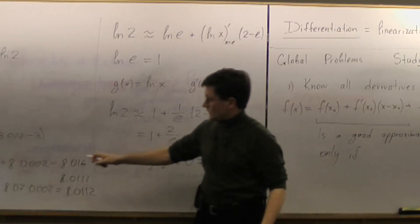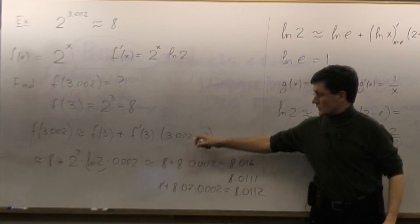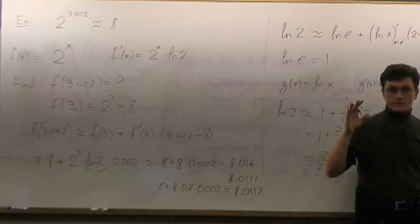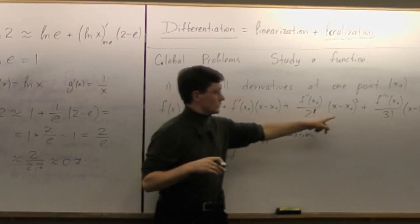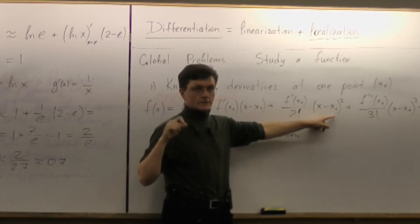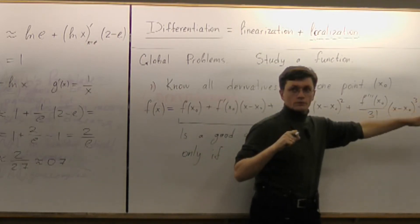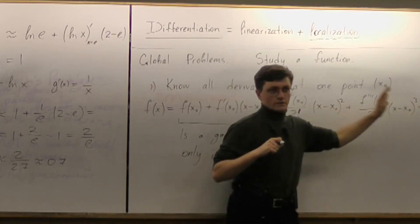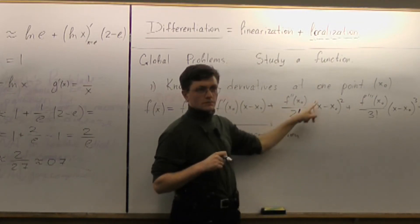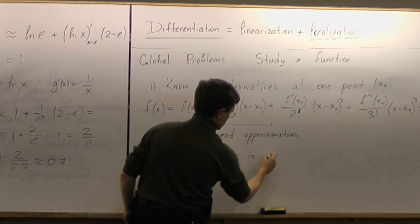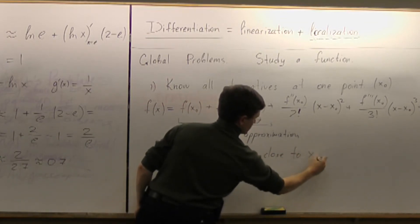Like in this example, the difference was of order 10 to the negative 3. So a square would be of the order 10 to the negative 6 and then 10 to the negative 9 and so on and so forth. So the rest of series is really negligible if x minus x0 is small, if x is close to x0.